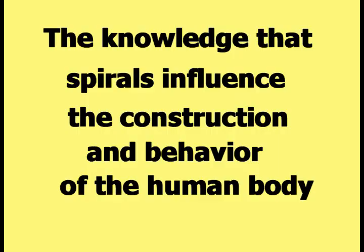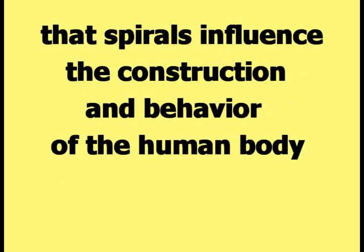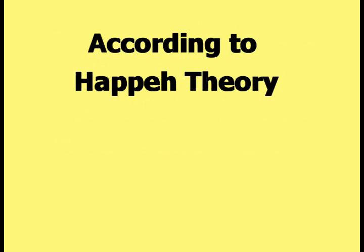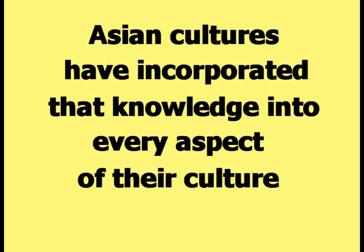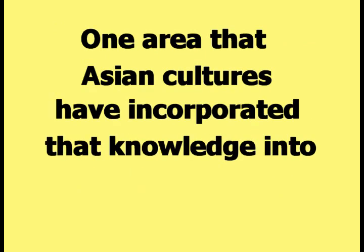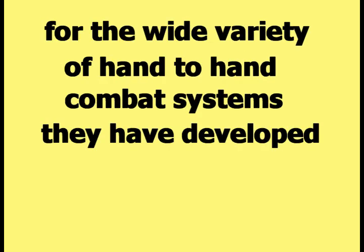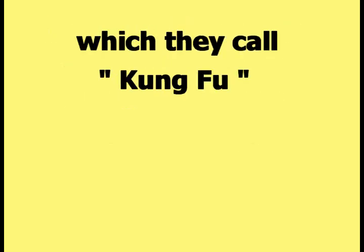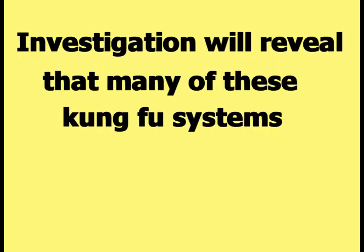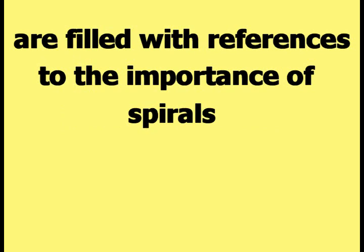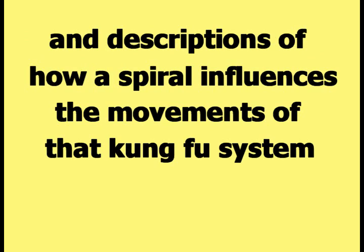The knowledge that spirals influence the construction and behavior of the human body is not unique to Happy Theory. Asian cultures have known for hundreds of years that spirals influence the human body and have incorporated that knowledge into every aspect of their culture, including hand-to-hand combat systems. Asian cultures have developed a wide variety of such systems, which they call Kung Fu, and many of these systems are filled with references to the importance of spirals and descriptions of how a spiral influences their movements.